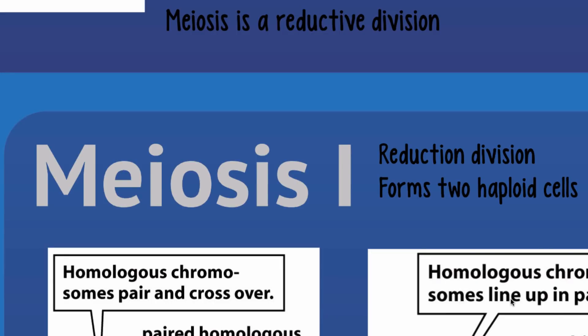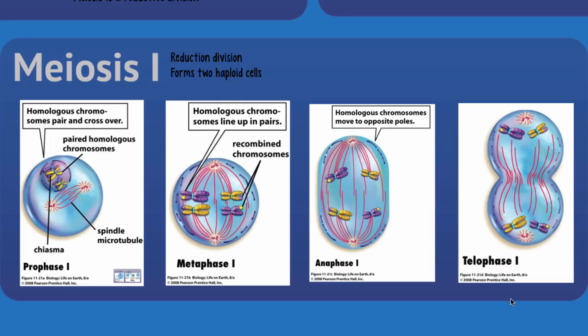Then the cell enters the first round of meiosis, which we call meiosis one. This is where all of the unique events in meiotic cell division occur — this is the reduction division. The parent cell going into meiosis one will be a diploid cell, and at the end of this first round, we will have two haploid daughter cells. The stage names are copied from mitosis: prophase, metaphase, anaphase, telophase, denoted with a one — so prophase one, metaphase one, etc.